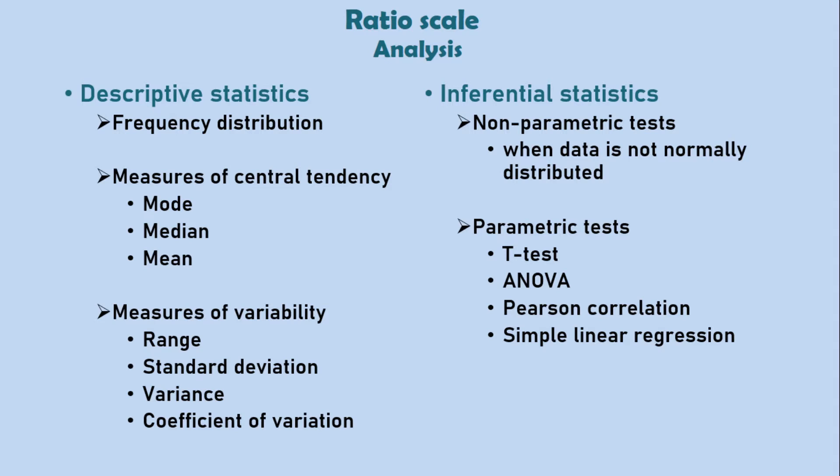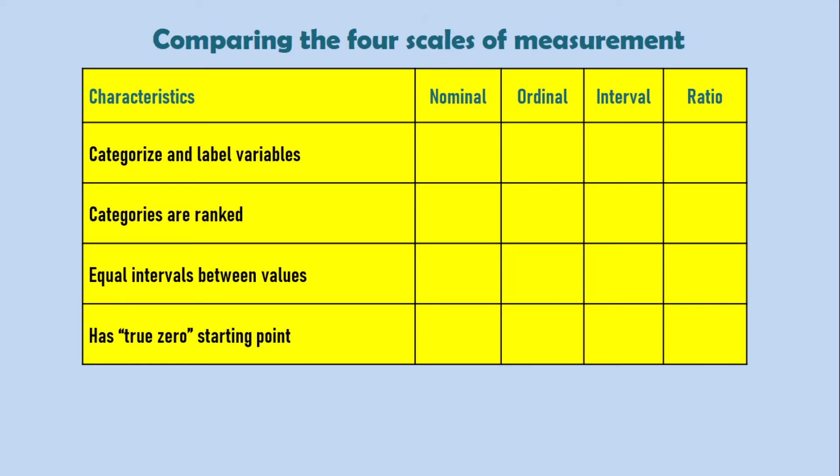As you might have noticed by now, the analytical options or tools become more available the higher you go on the scales of measurement. Now, this table summarizes and compares the various levels or scales of measurement. You can tell that all the four levels of measurement categorize and label variables, but then only three of them, that is, ordinal, interval, and ratio scales, rank the categories. And then, further down, you see that only the interval scale and the ratio scale have equal intervals between the values on the scale. In the last point, which is a zero starting point or a true zero starting point, only a ratio scale has it. So you can tell that each scale is an incremental level of measurement, meaning that each scale fulfills the functions of the preceding scale plus an additional characteristic or function absent in that preceding scale.